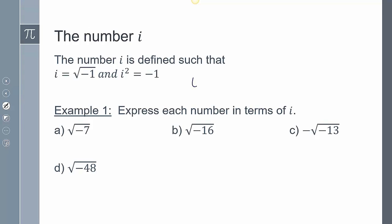To prove that: if i is the square root of negative 1, and we square both sides, the square root and the square cancel out, and so we get i squared equals negative 1.